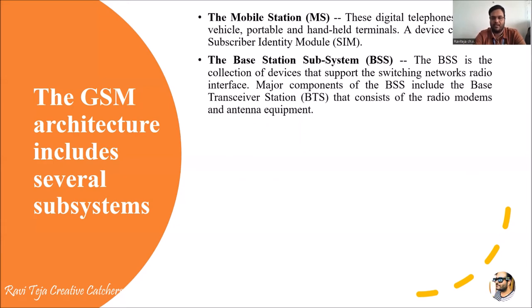Next comes the Base Station. Base stations are important components which communicate with the mobile station. Whenever we want to get signals for our mobile phones or cellular devices where the SIM is inserted, we need this base station. The base station is referred to as BSS — Base Station Subsystem — and it has a switching network and radio interface for transmitting and receiving signals.